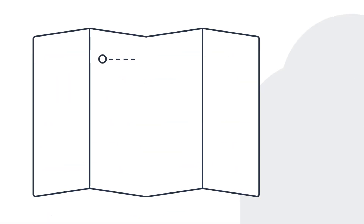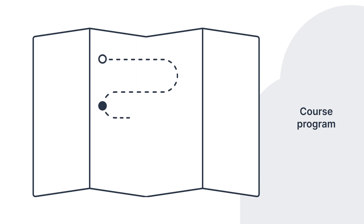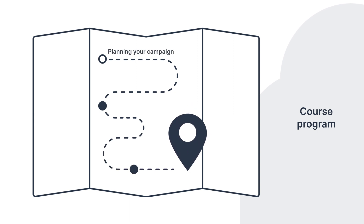We're going to follow the main email marketing planning steps. We will start with planning your campaign, then move to the most creative part — producing an email. And then, of course, we will learn how to test and measure whether your campaign was successful.